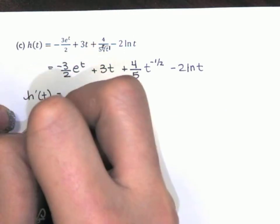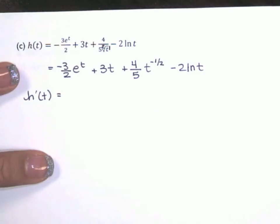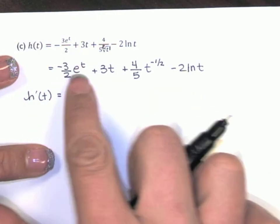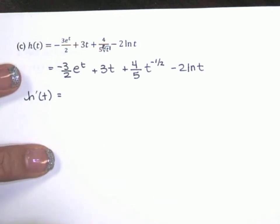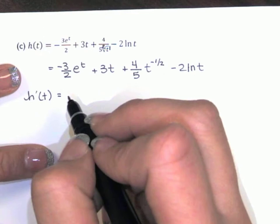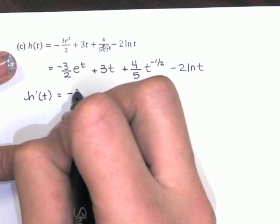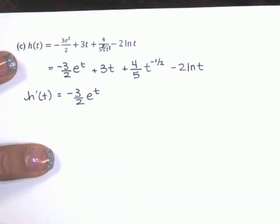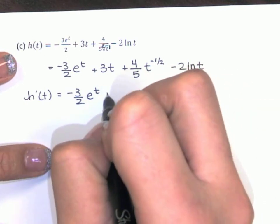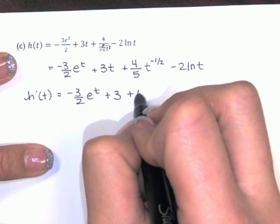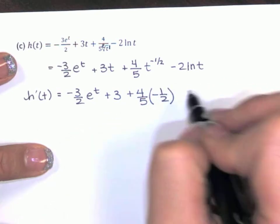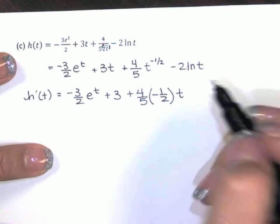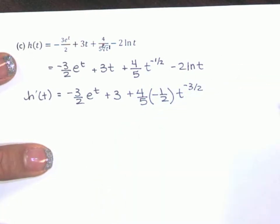Now to compute h prime — that was just a rewrite with no calculus involved. We take the derivative of each term separately and add them together, because the derivative of a sum is the sum of the derivatives. The derivative of a constant times e to the t is that constant times e to the t. The derivative of a constant times t is just the constant. Here I've got a power rule, so I bring my constant down, then my power down, and multiply by t to the one less power. Negative 1 half minus 1 is negative 3 halves.